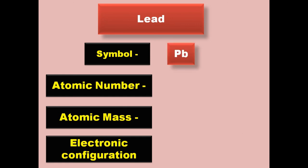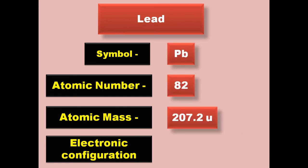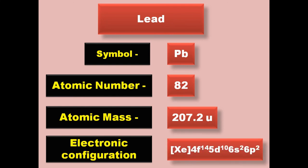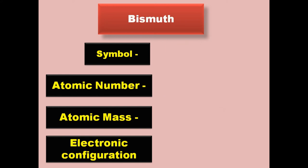Lead has symbol Pb, atomic number 82, atomic mass 207.2, electronic configuration [Xe] 4f14 5d10 6s2 6p2. Lead is a post-transition metal and exists in solid form at room temperature.